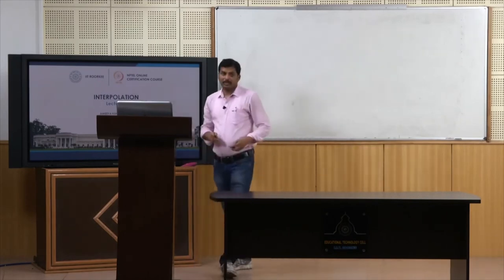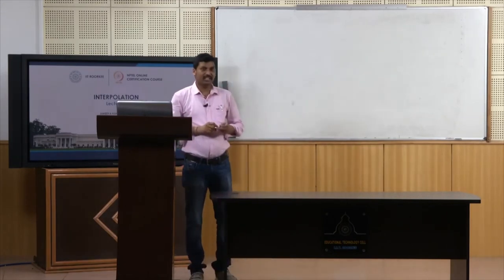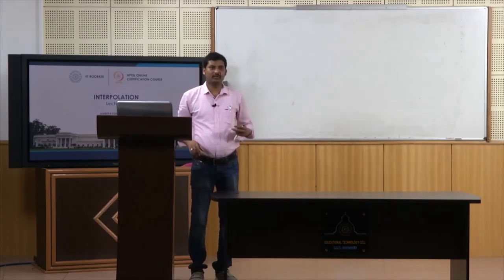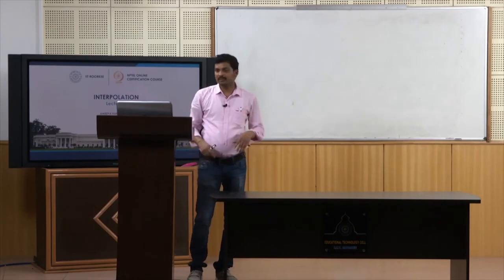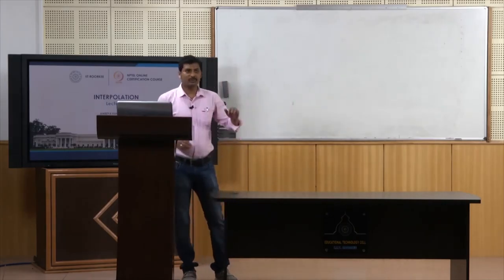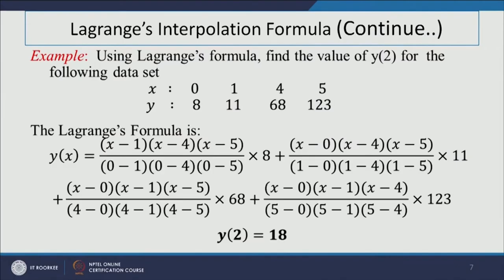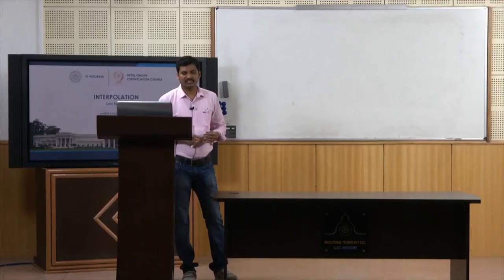To illustrate the Lagrange interpolation formula, we discuss an example: given data x = 0, 1, 4, 5 and corresponding y = 8, 11, 68, 123, determine the value of y (i.e., f) at the point x = 2 using the Lagrange interpolation polynomial.